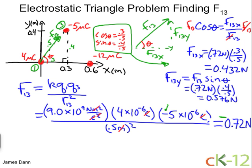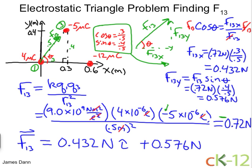Now we can write out F13 in vector notation, and I'll do that down here. So F13 has an x component of 0.432 newtons, and I'll give that the i-hat. i-hat means that it's in the x direction, plus 0.576 newtons in the j-hat direction. j-hat means the vertical, or y-hat direction. We've solved F13, and we're ready to complete the triangle.